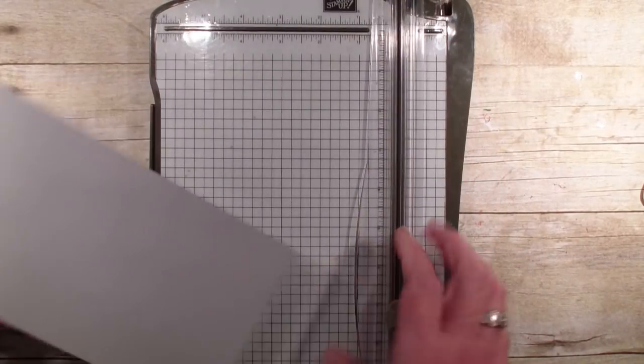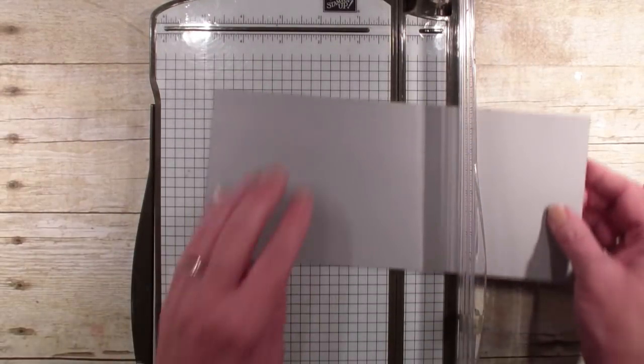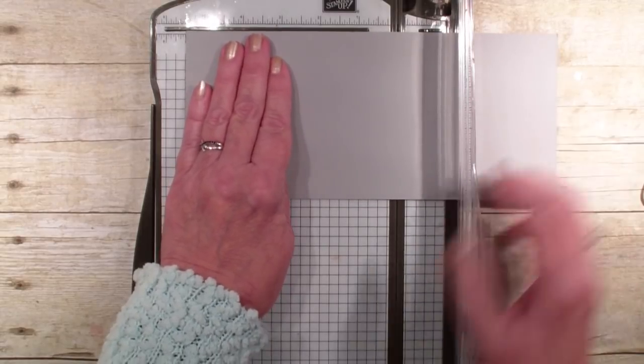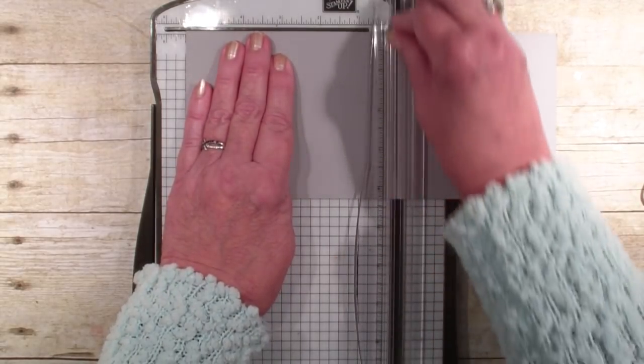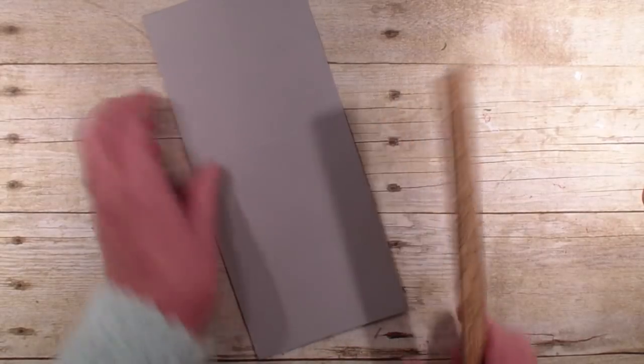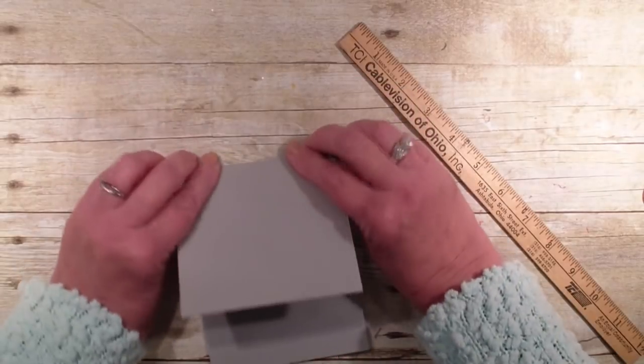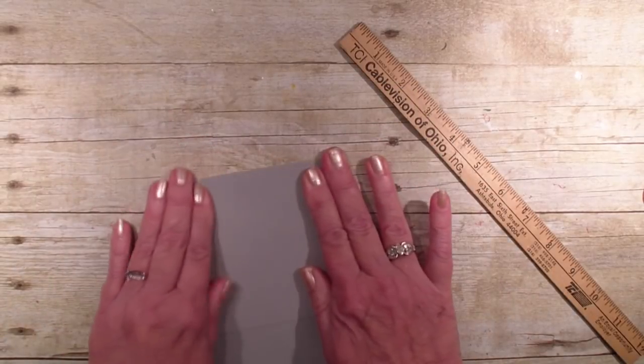I'm going to bring in a piece of smoky slate. This measures four and a quarter by nine and three quarter, and we are going to score it at the five and a half inch mark. And then I'm going to bring in a ruler, and let's go ahead and burnish that over like so.